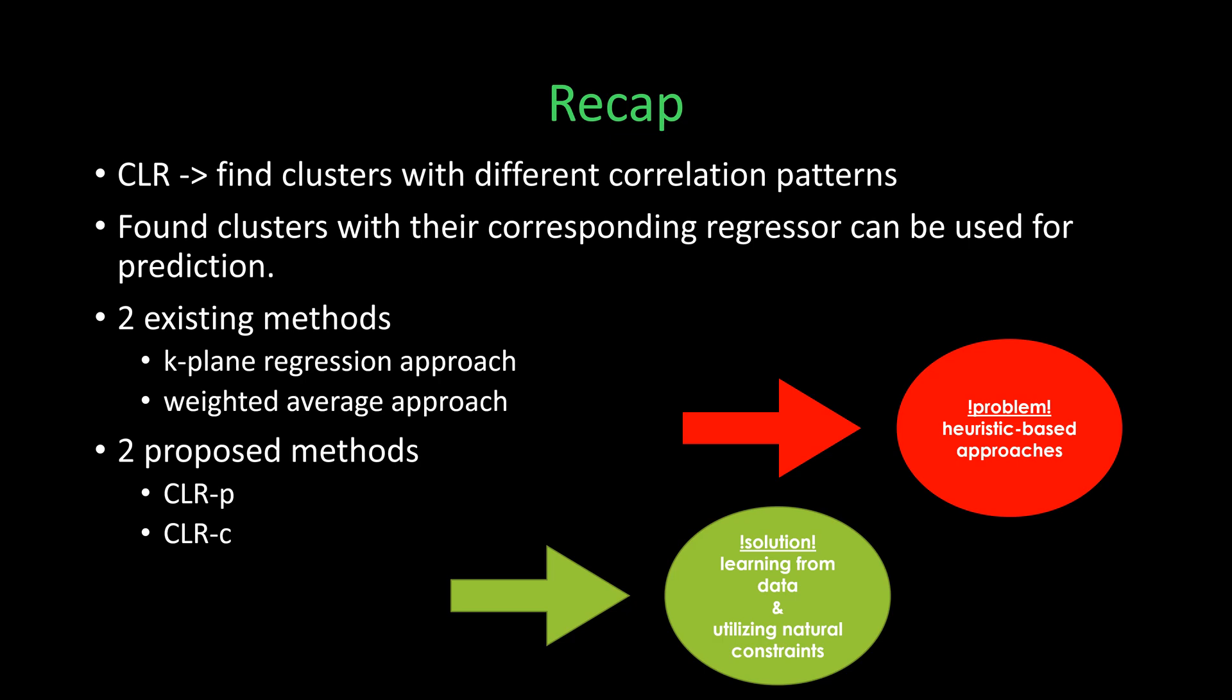As a recap, it is worth to remember the informal goal of cluster-wise linear regression is to find clusters with different correlation patterns. Naturally, identifying such a relation can also be useful for prediction purposes. However, we do not have target values for test data, so there is a need to determine cluster labels for test data before the predictions. In this context, the authors presented two different methods based on k-means and weighted average. Both are problematic because of their heuristic-based natures. So, in this study, the authors show that two different new methods they propose, predictive and constrained CLR outperforms existing methods by utilizing a new optimization function and also by data constraints. Thank you for your listening.